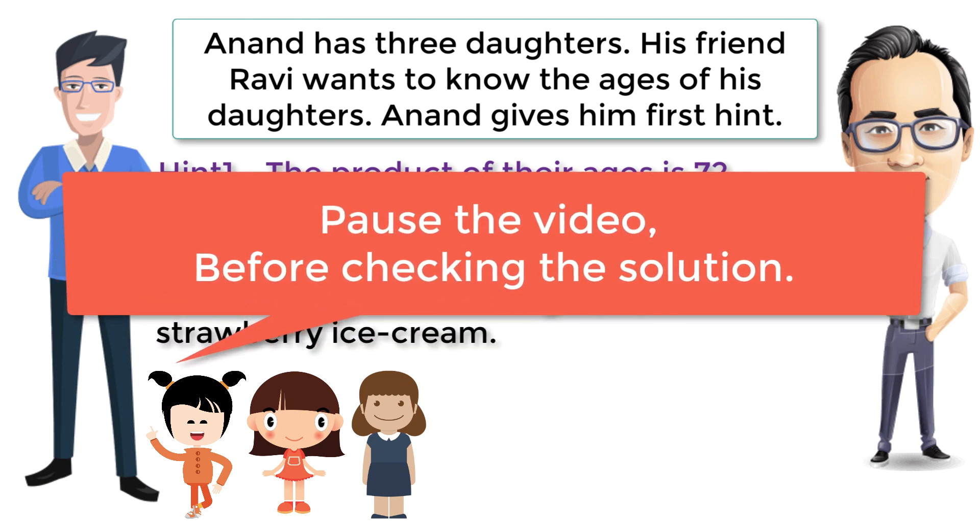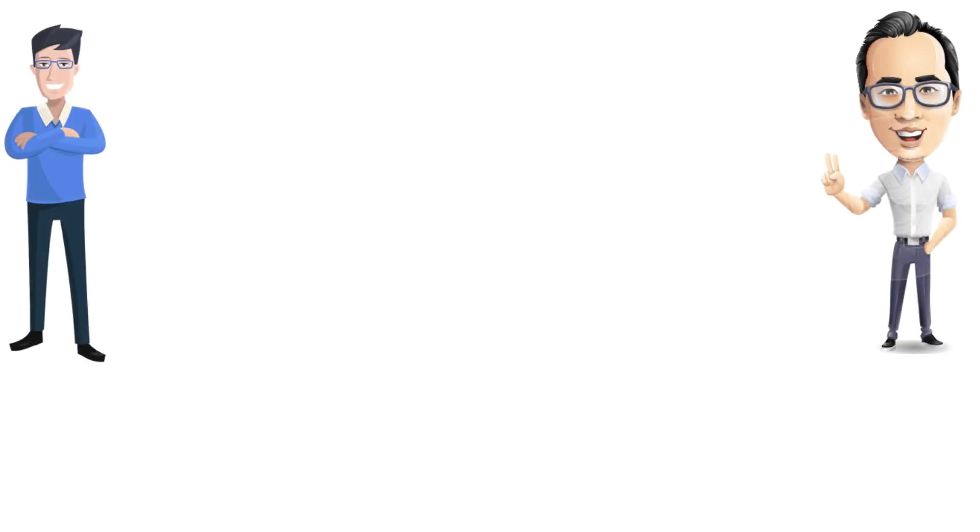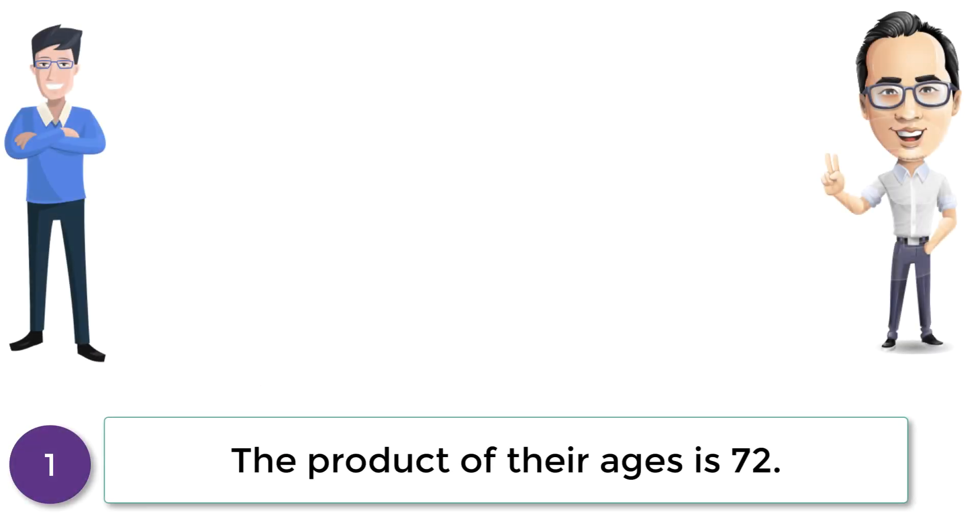Let's check the solution now. To start with, list out all possibilities to get 72 from the product of three different ages, because the first clue given is that the product of the three daughters' ages is 72.